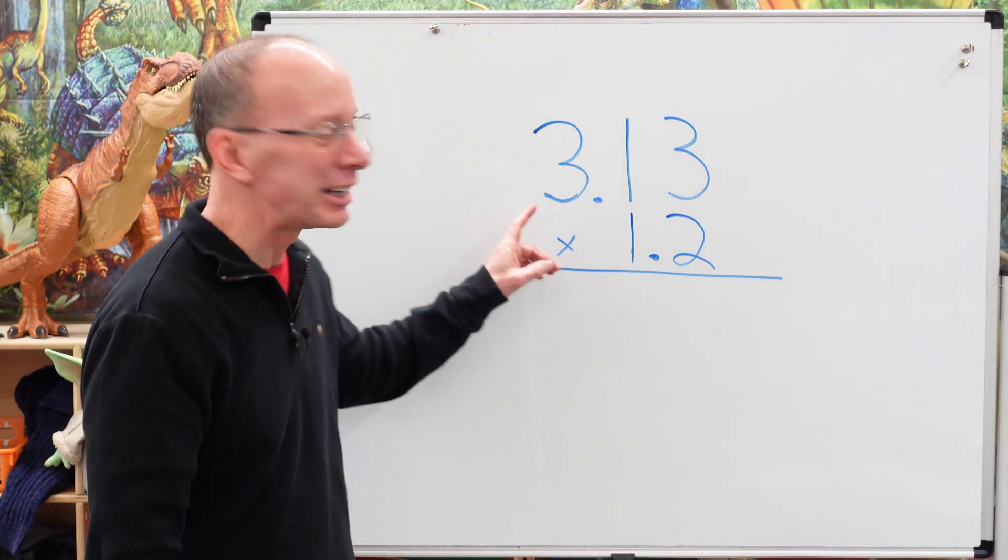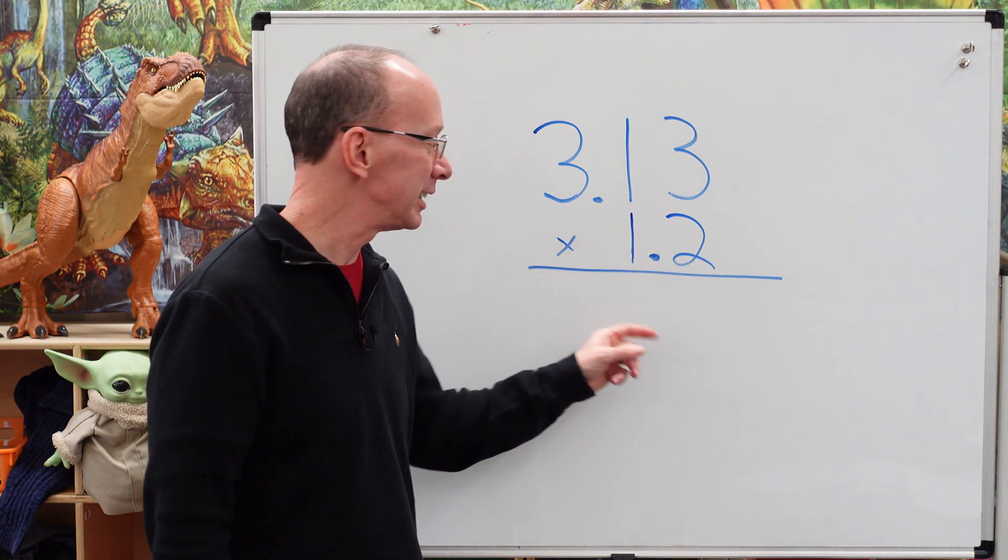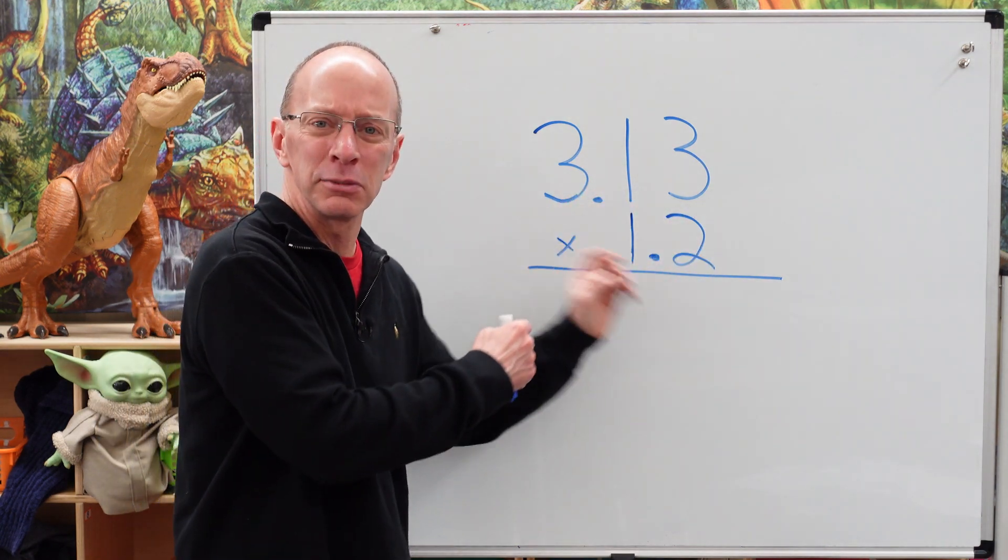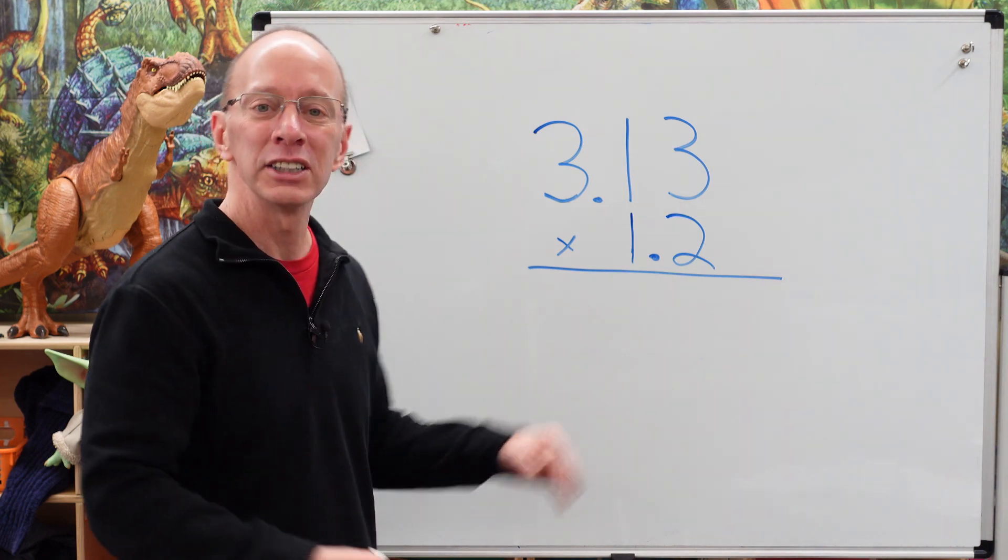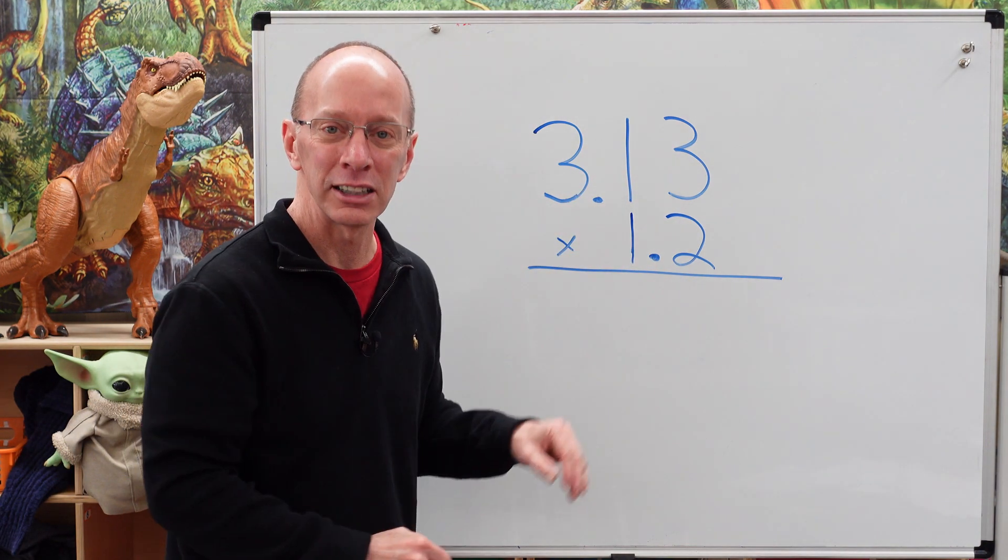All right, first of all, we have the number 3.13 or 3.13 times 1.2. Now, you're probably wondering, where am I going to put the decimal? Don't worry. We're going to talk about that in a little bit. First of all, we just want to go ahead and multiply it. When you're multiplying, just kind of ignore the decimal point for right now.